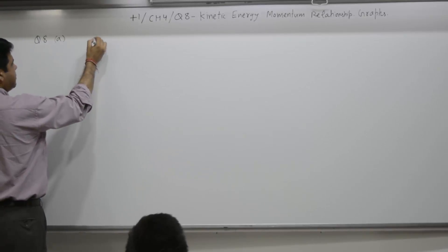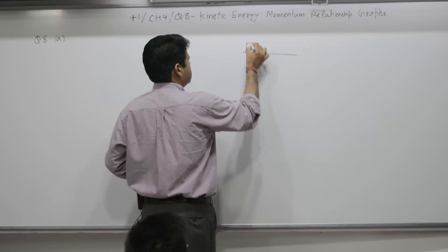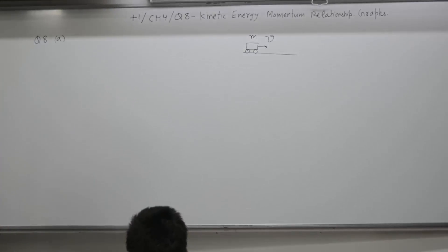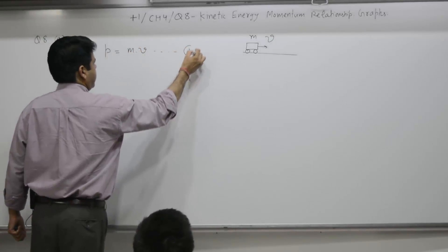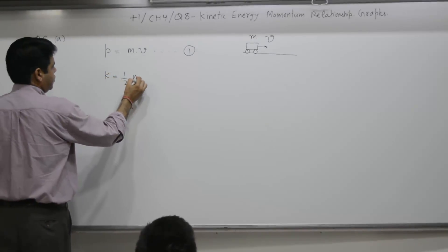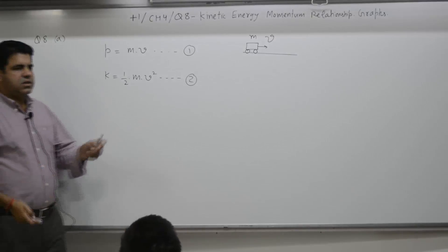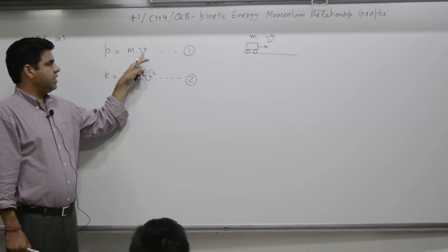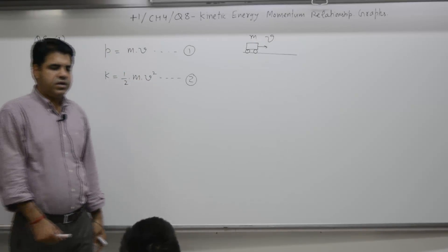We have to find the relationship between momentum and kinetic energy. There is a particle of mass m moving with velocity v. The formula for momentum is p = mv, and the formula for kinetic energy is K = ½mv². We need to eliminate v from these two equations. There are four parameters: p, m, v, and K. Take the value of v from equation one and put it into equation two.